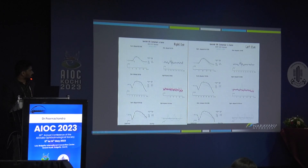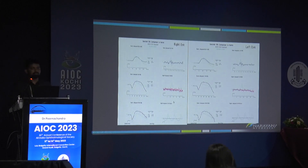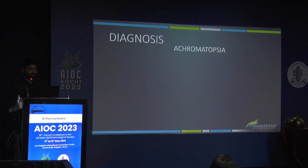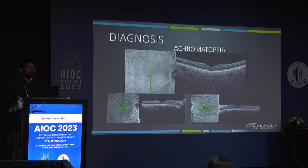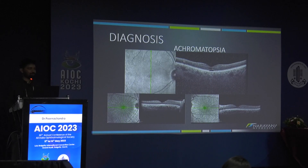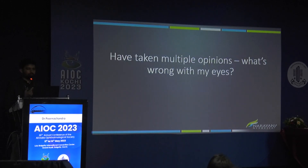ERG showed completely normal dark-adapted responses but undetectable light-adapted responses. Though the retina appeared normal, cones across the entire retina were dysfunctional. This is a case of achromatopsia — a form of stationary cone dystrophy. These patients have severe color vision problems and cannot identify a single Ishihara plate. Notably, this patient did not even have the typical foveal cavitation seen in achromatopsia; patients can have a completely normal OCT.